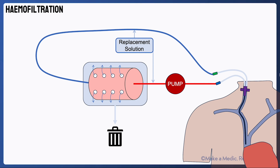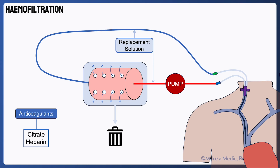The benefit of pre-dilution is that the blood is more dilute as it enters the filter, and hence there is a lower risk of the filter clotting. However, as the blood is more dilute, less solute clearance will take place. Conversely, post-dilution achieves better solute clearance, but as the blood is more concentrated, it is more likely to clot. In general, to reduce the risk of the filter clotting, anticoagulants such as citrate or heparin will be infused into the blood before the filter, provided there are no contraindications.